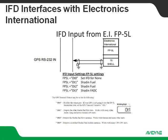On the output side, there are four different options: OT0, OT1, OT2, and OT3. If you're doing OT0 on the FP5L, that's no data. OT1 is going to be a Shadin Fuel format, and that's what you set the IFD up for on that input. FP5L set for OT2 is also a Shadin Fuel format. If the FP5L is set up for OT3, you're going to set that for Shadin FADC.